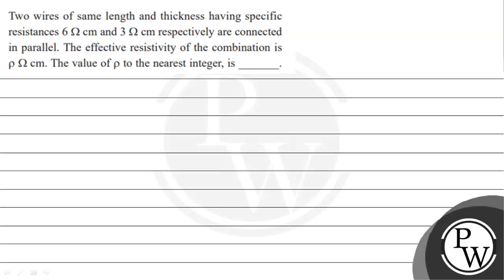Hello, let's read the given question. The question states that two wires of same length and thickness having specific resistances 6 ohm-centimeter and 3 ohm-centimeter respectively are connected in parallel. The effective resistivity of the combination is rho ohm-cm. The value of rho to the nearest integer is to be found.